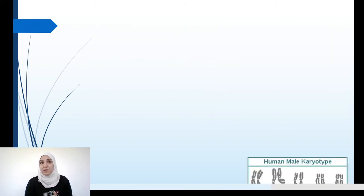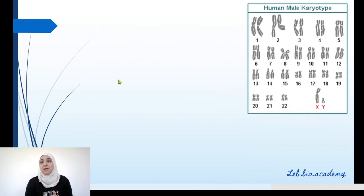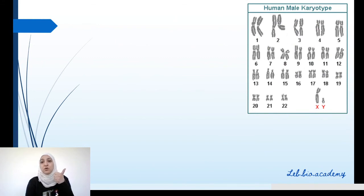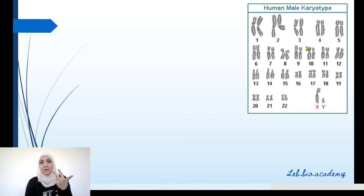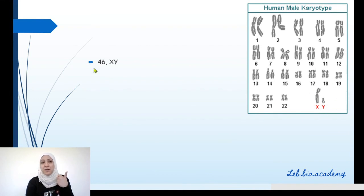Another example. Let's write the chromosomal formula of this karyotype. First, the total number of chromosomes — which is also 46. Then you write a comma. Finally, what are the gonosomes? XY. So we write XY. Therefore, the chromosomal formula is 46,XY.